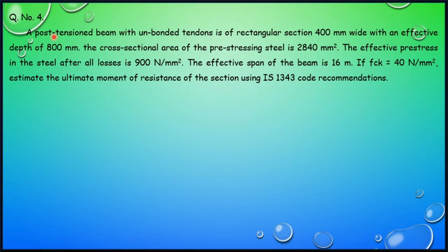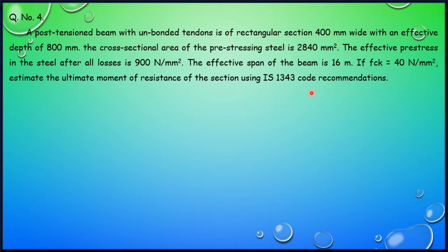Estimate the ultimate moment of resistance of the section using IS1343 code recommendations. One important point to note in this problem is that it is a post-tensioned beam with unbonded tendons — this will change which table we refer to in the IS1343 provisions. Let us begin with the solution.